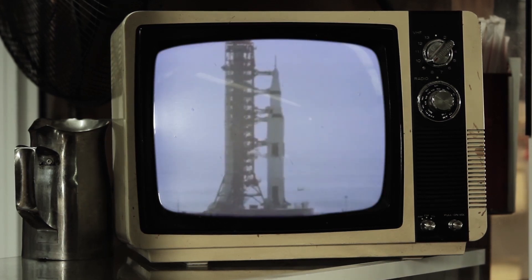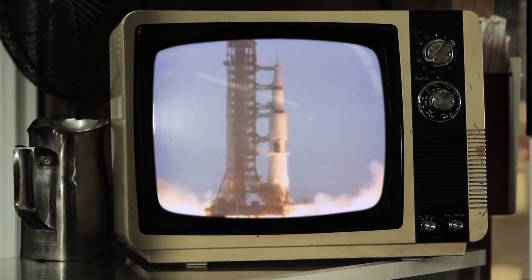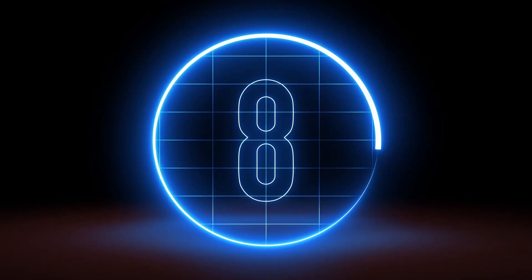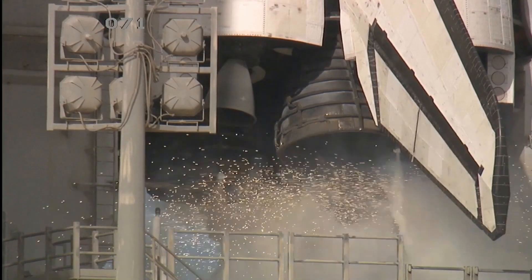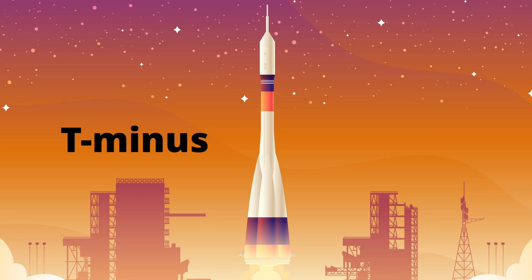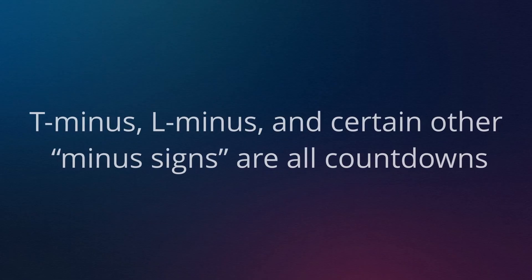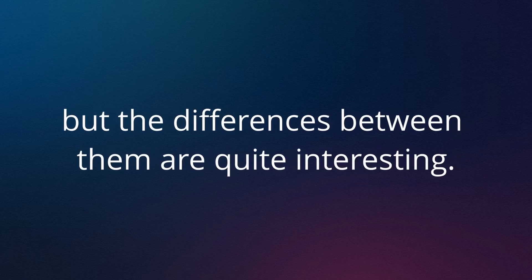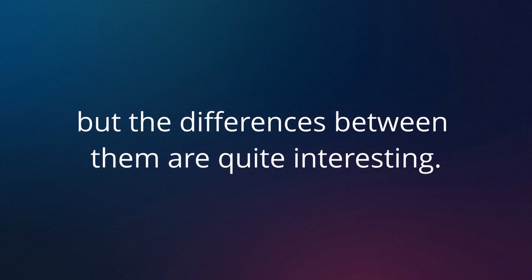When I first started watching videos of rocket launches, I was often confused when I heard people counting off T minus 10, 9, 8 in the seconds before takeoff. I knew it was a countdown of some kind, but it took me a while to understand why they called it T minus or L minus in different situations. In fact, T minus, L minus, and certain other minus signs are all countdowns, but the differences between them are quite interesting.